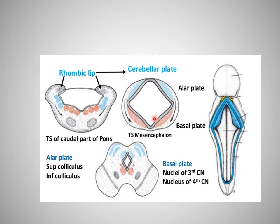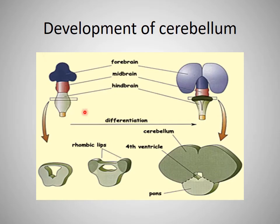A transverse section of the pons and midbrain shows the red areas as basal plate nuclei with migrating neuroblasts, and the blue areas as alar plate neuroblasts. The development of the cerebellum begins from the rhombic lips, which develop from the hindbrain. These rhombic lips dilate and meet in the midline to form the cerebellar plate, with the central portion forming the vermis.